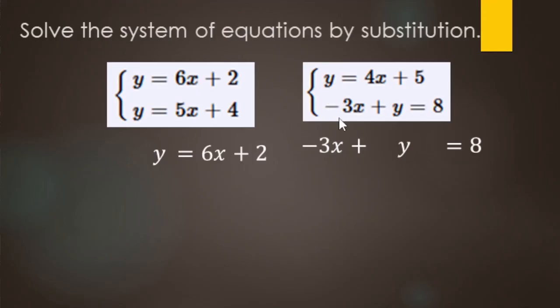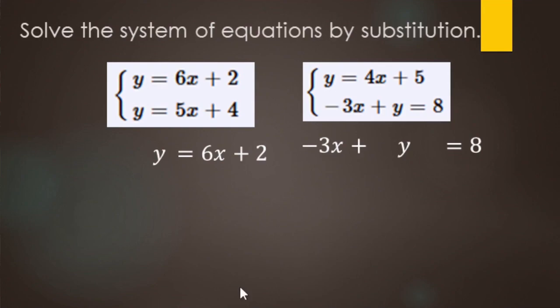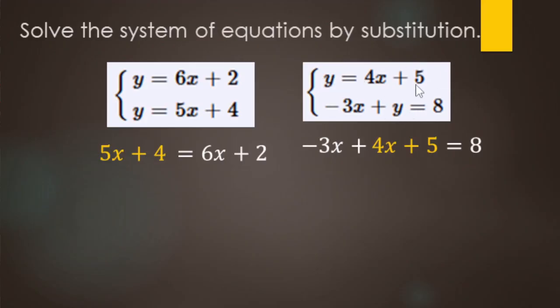For the substitution step, when you have y equals and y equals, a lot of students say you just make them equal to each other — and yes, since they're both equal to y, you set the expressions equal. The 4x plus 5 goes in the middle, you solve for x, then pick an equation to solve for y.